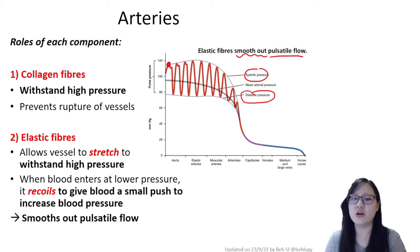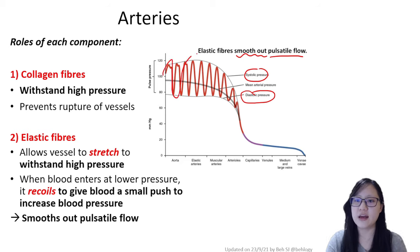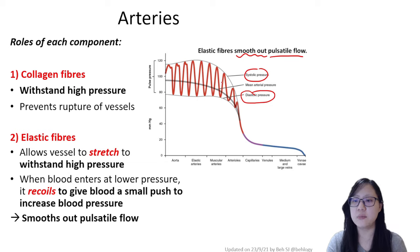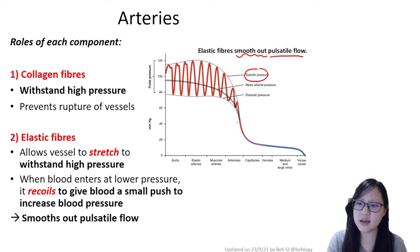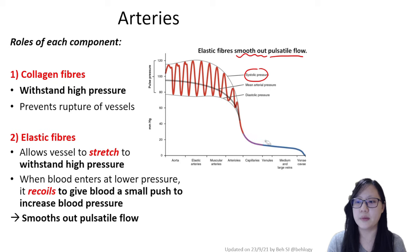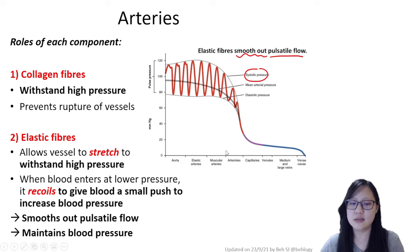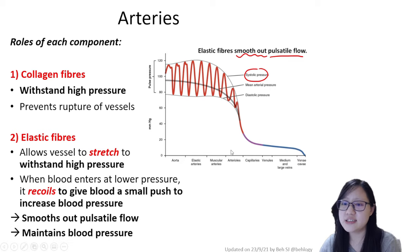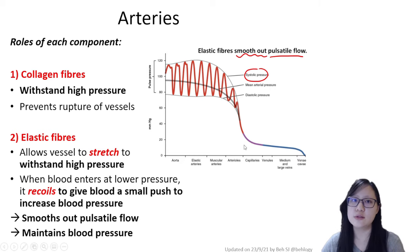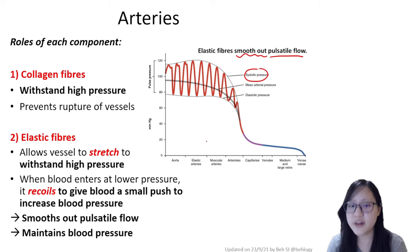The repeated stretching and recoiling of elastic fibers throughout elastic arteries smooths out the pulsatile flow. As shown in the graph, the maximum and minimum pressure points get smaller and smaller, and eventually at the arterioles and capillaries, blood flow smooths out completely. This helps maintain blood pressure and prevents it from fluctuating too much throughout the body — the pulsation is mainly apparent near the heart.